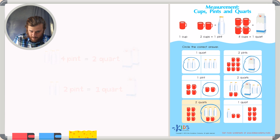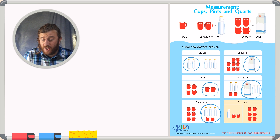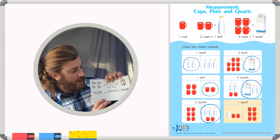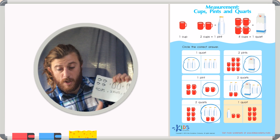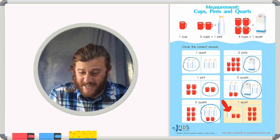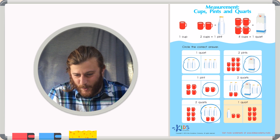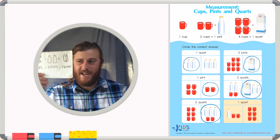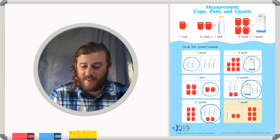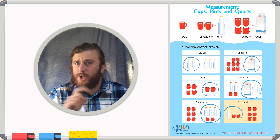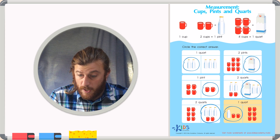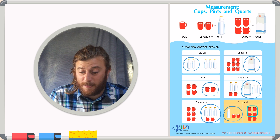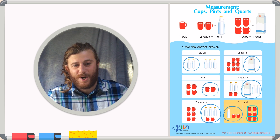And for our last example, it again wants to know which picture best represents one quart. Well, I know one quart can be represented by two pints or by four cups. So if we look at our first answer choice, we have one pint and two cups. But I know that two cups is equivalent to one pint. So really, I have two pints, which is the same thing as one quart. So I think that this is the correct answer choice. But just to make sure, I'm going to check my last answer choice. There are six cups. I know that four cups would equal one quart. And two cups left over would give me one pint, giving me too much liquid.